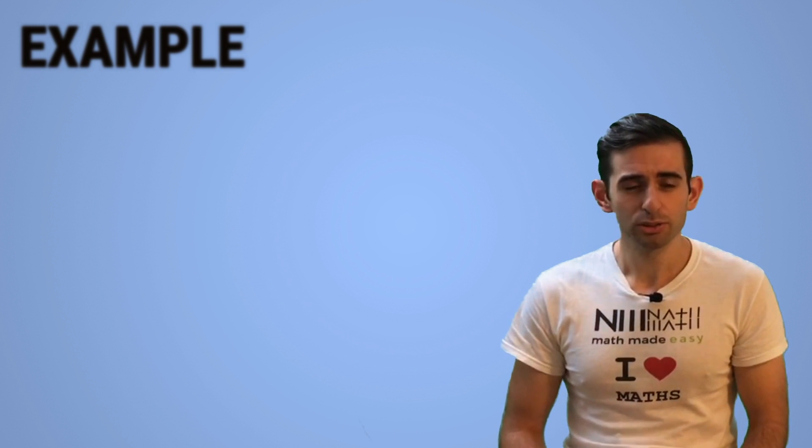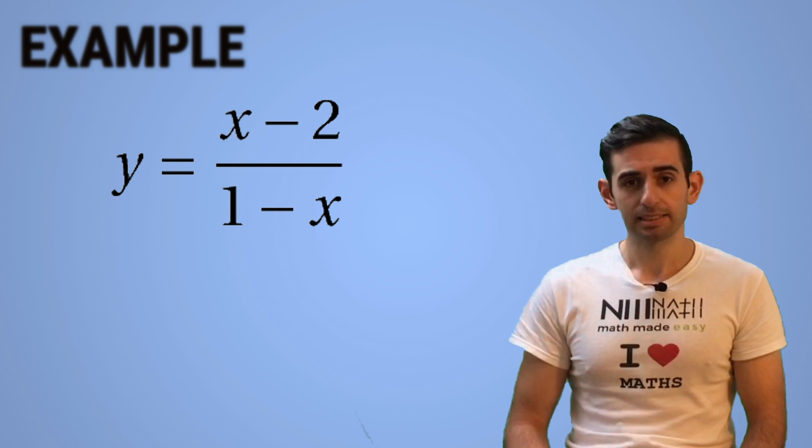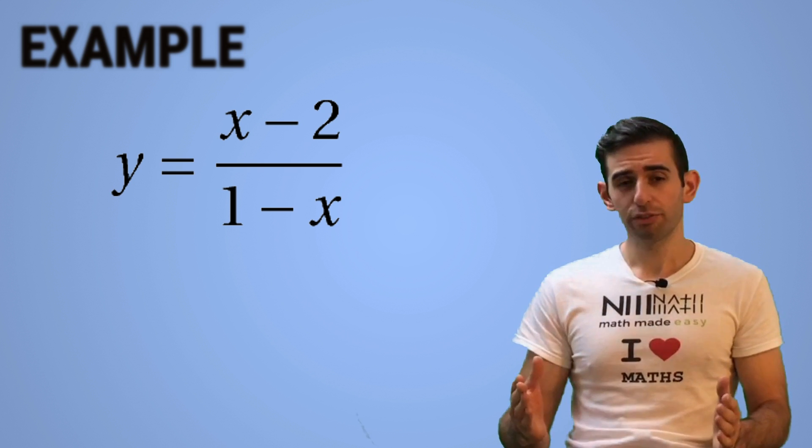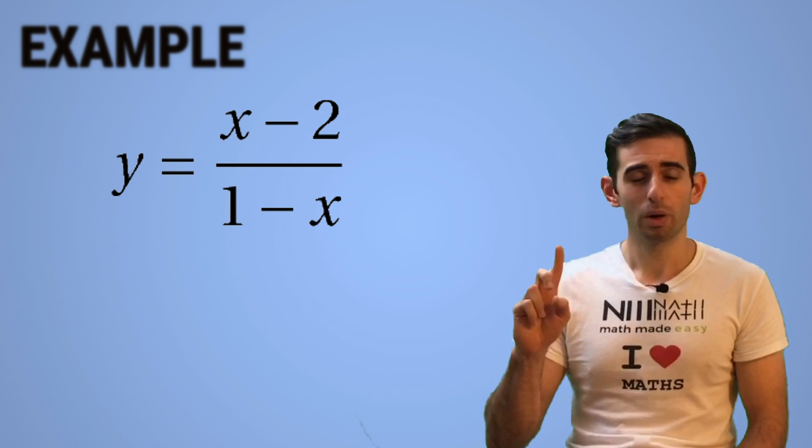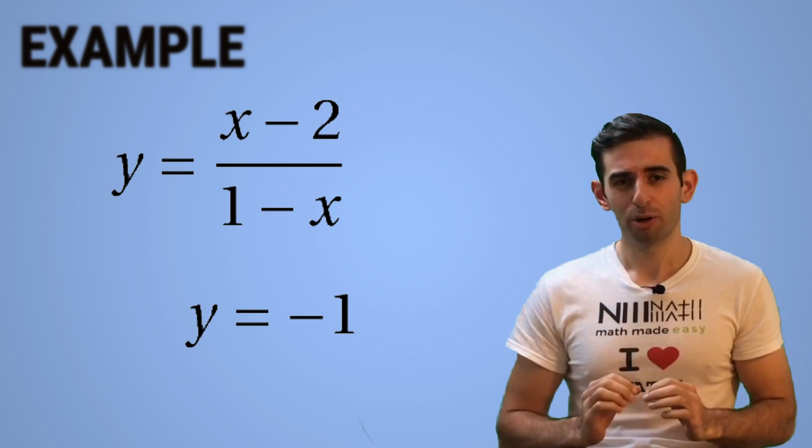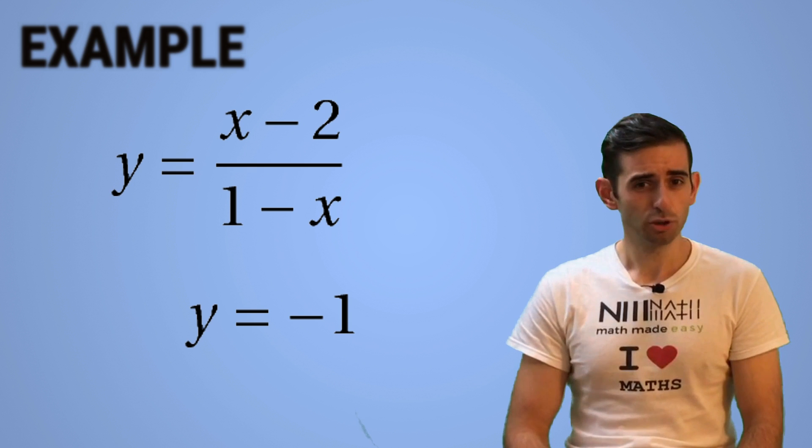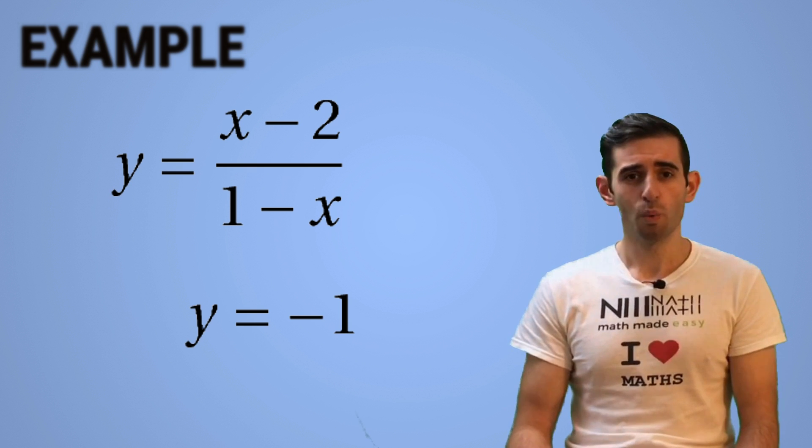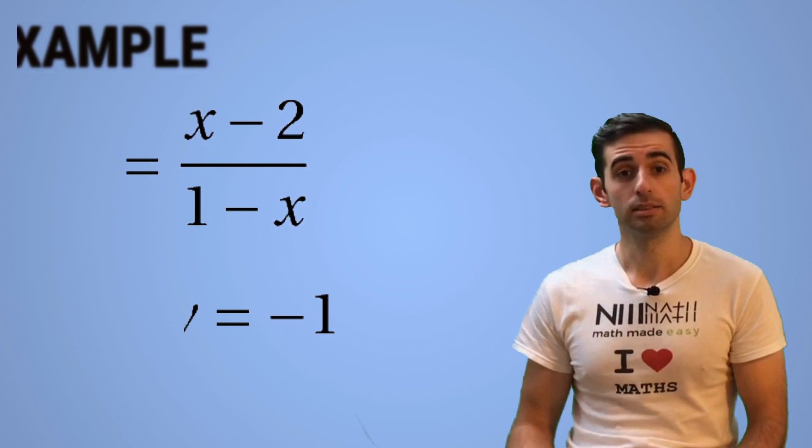So we have y equals x minus two over one minus x. Pause the video if you want and try this yourself. Right, so the answer in three, two, one: the answer is y equals negative one. Right? Because x on top and bottom is the highest power, so the coefficient of x is one on top, on the bottom it's negative one. The ratio one over negative one is simply negative one. Right? That's how easy it is to find horizontal asymptotes.